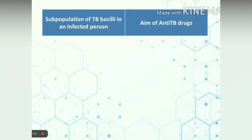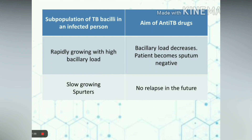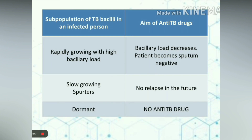There are different subpopulations of TB bacilli in an infected person. These include rapidly growing bacteria present in the wall of cavitary lesions where oxygen tension is high. Drugs which inhibit these bacteria will decrease the bacillary load and the patient will become sputum negative, therefore non-contagious to other people. Other bacteria are slow-growing, located intracellularly, and as spores within caseous material where oxygen tension is low. Drugs which inhibit these bacteria will prevent relapse in the future. Lastly, dormant bacteria — no anti-TB drugs are found to act against them.